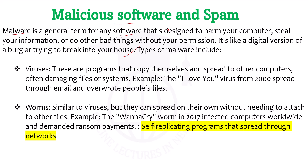Malware has different categories based on their behaviour. The first one is a virus. A virus means programs that copy themselves and spread to other computers, often damaging files or systems. They spread through attachments — when you click or run an attachment, such as the 'I Love You' virus sent through email with a description file attached.